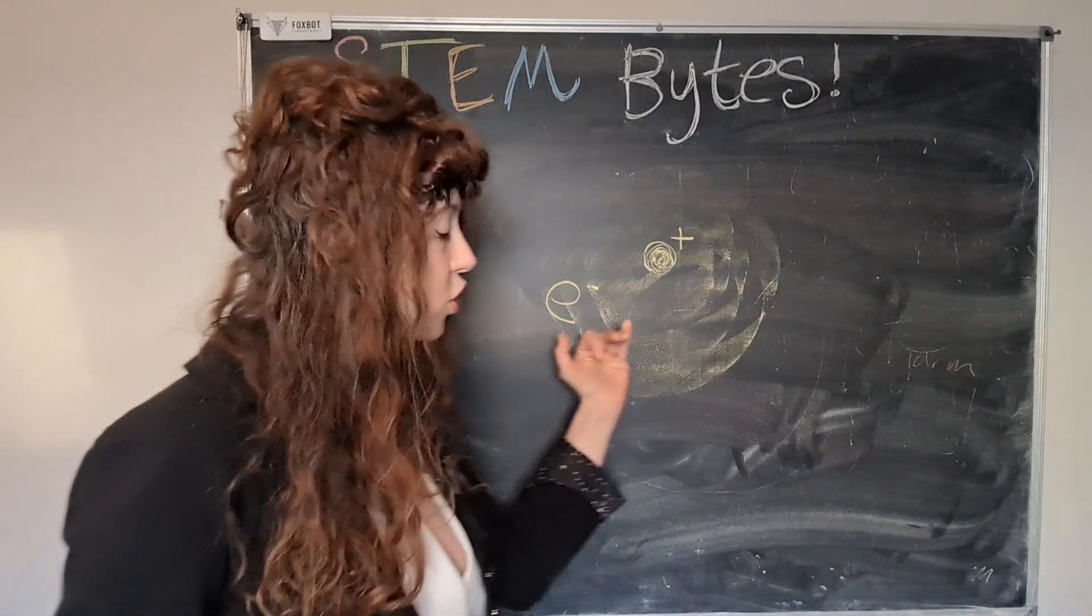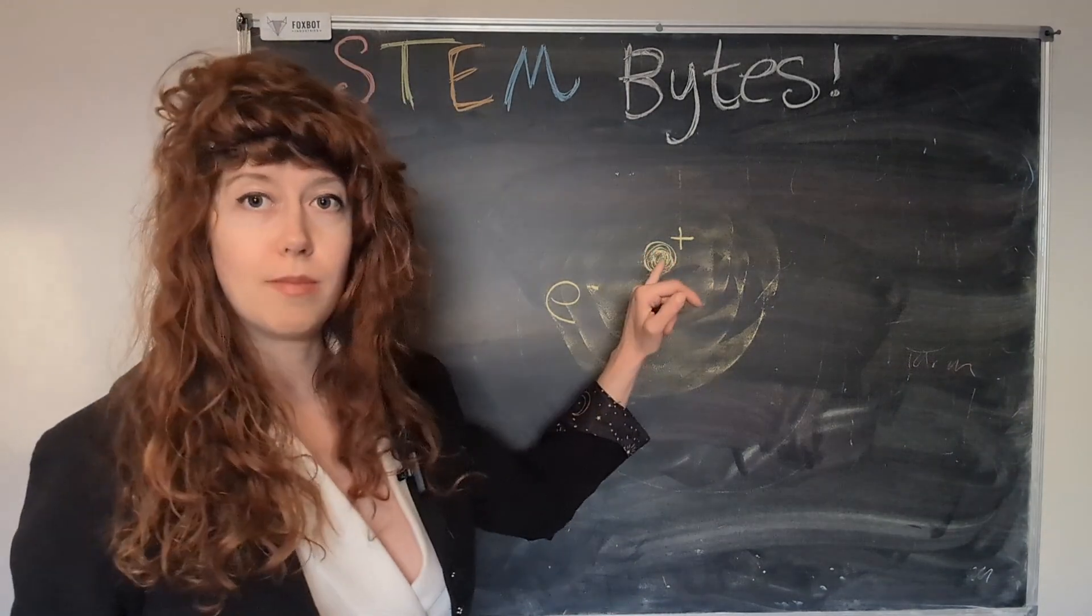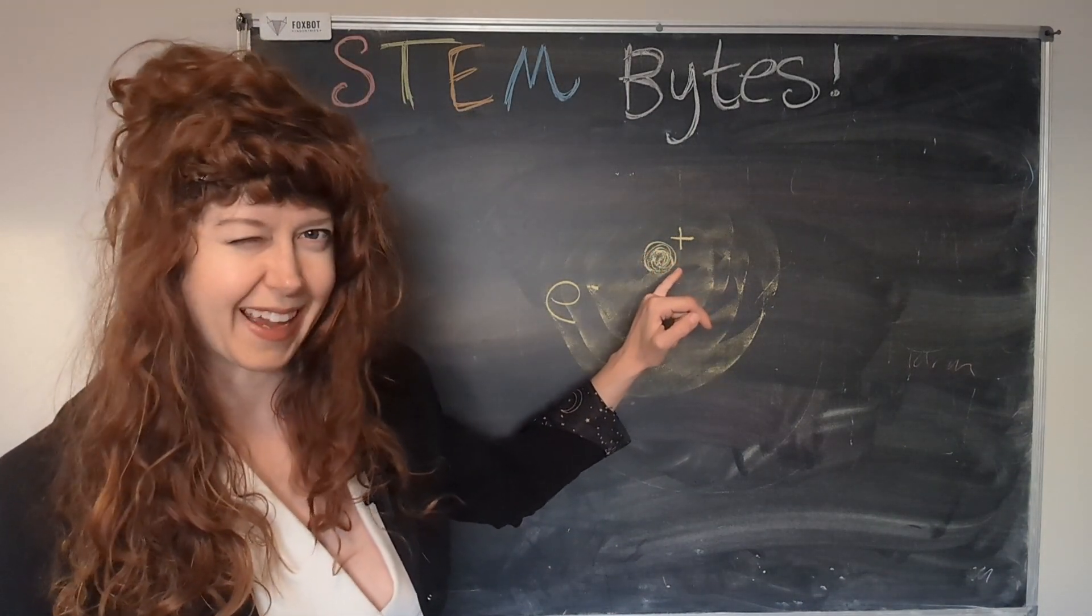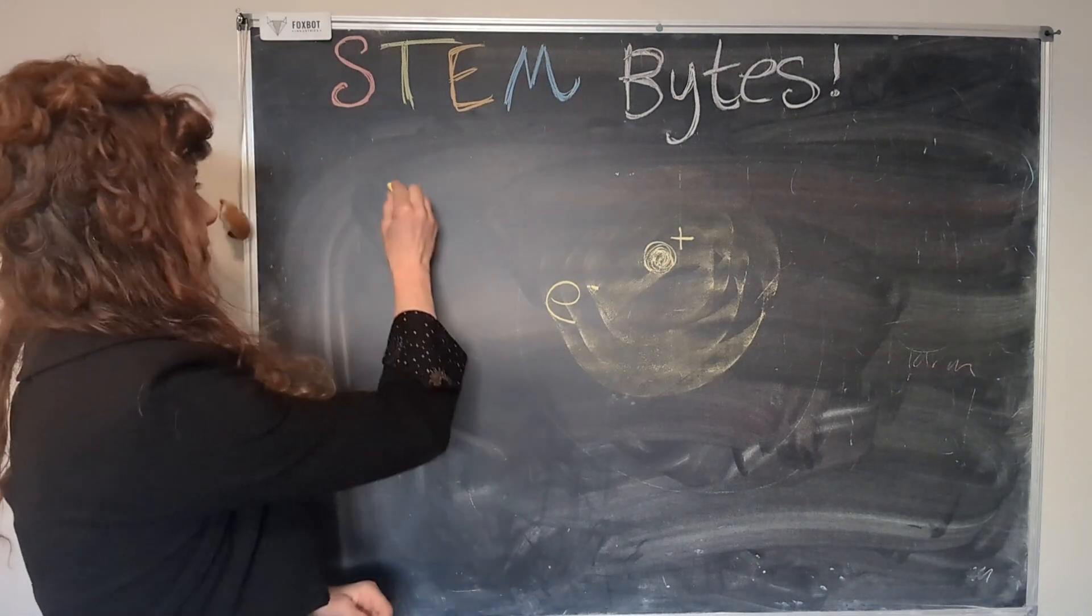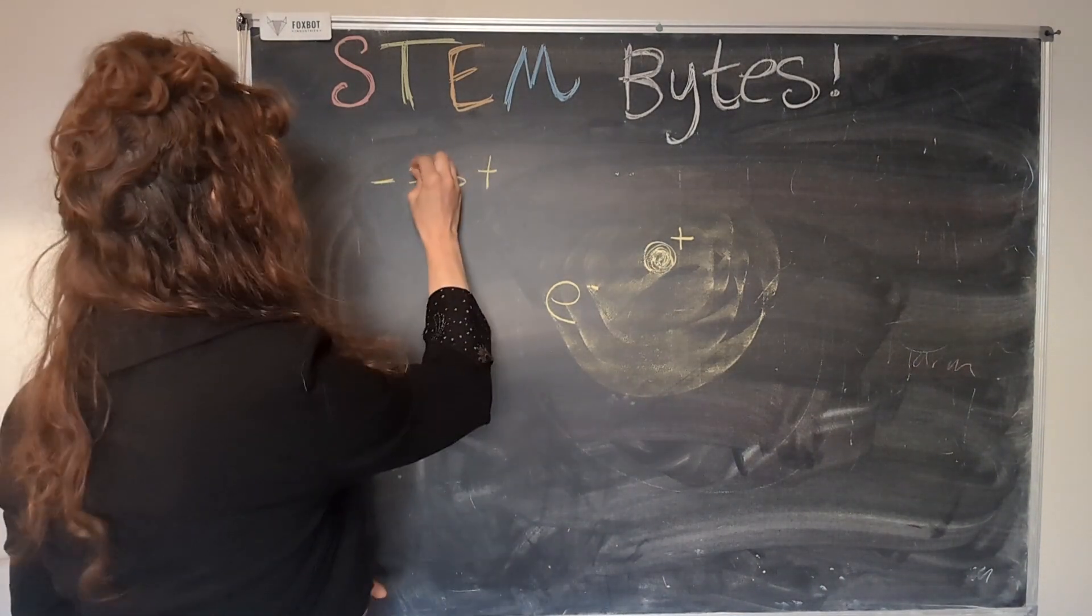So these negatively charged little electron cloud babies are attracted to mama nucleus, something like that, which has a positive charge. So negative is attracted to positive and vice versa.